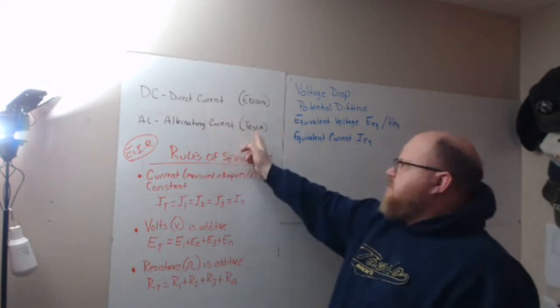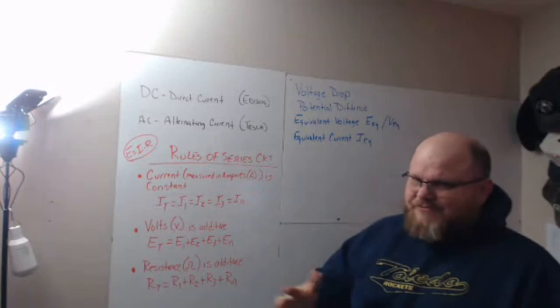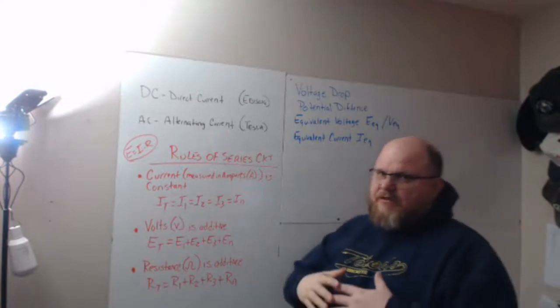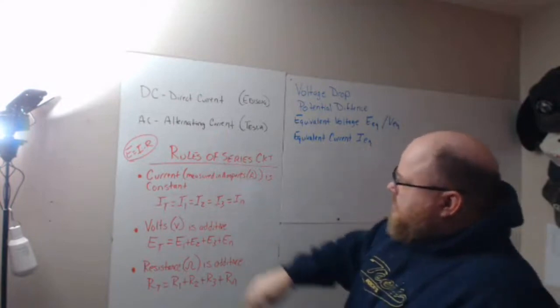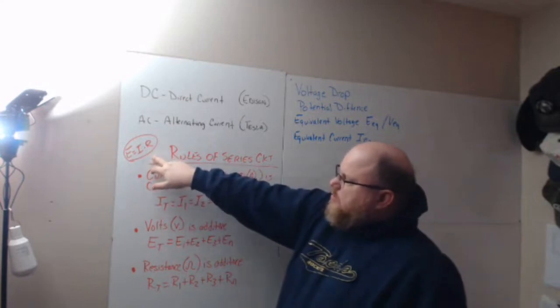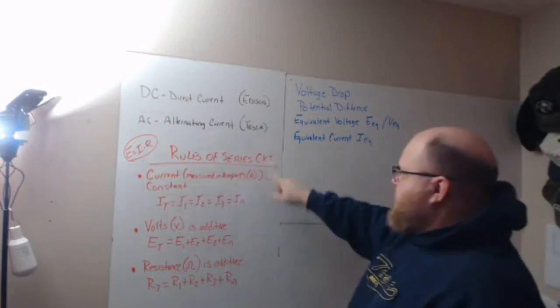Edison was the proponent for DC, Tesla for AC, which I'm probably sure you've seen on television and other situations. We're still going to use Ohm's law while we talk about the rules of a series circuit.